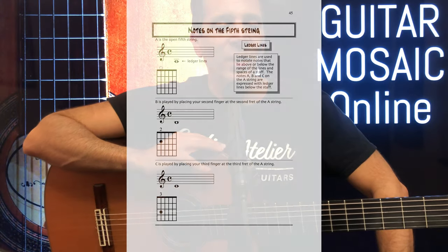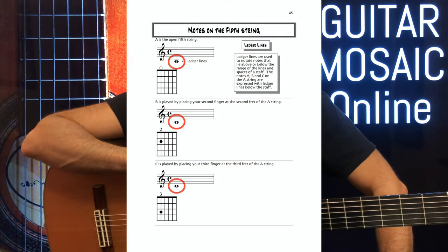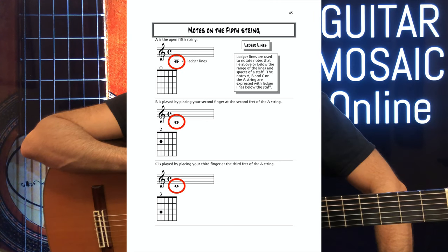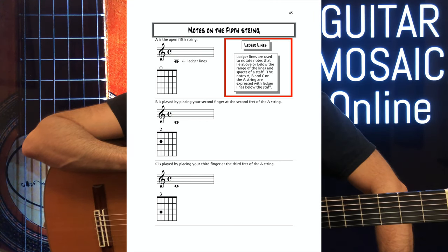Hi, so now we're on page 45. We're going to learn three new notes on the A string, and we're also going to learn about this concept called ledger lines.